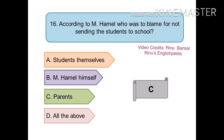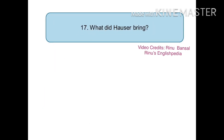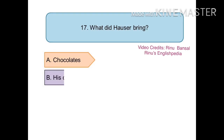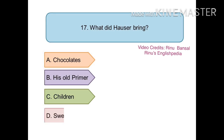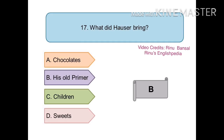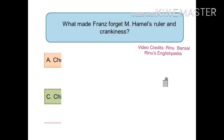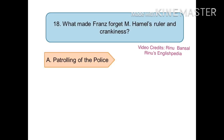The seventeenth question is: what did Hauser bring? The options are (a) chocolates, (b) his old primer, (c) the children, or (d) sweets. The right answer is (b) his old primer. Primer means an old textbook.